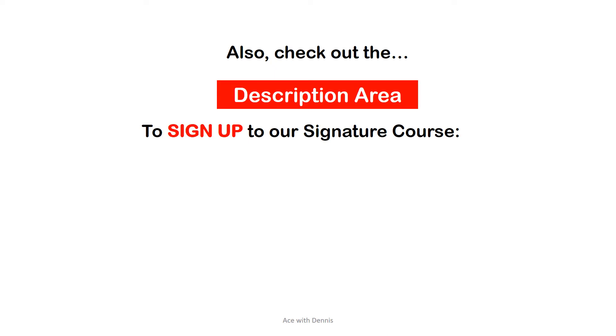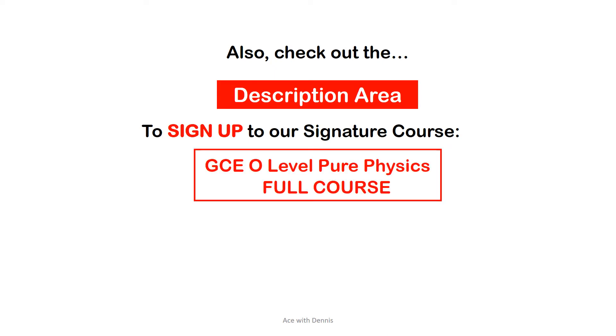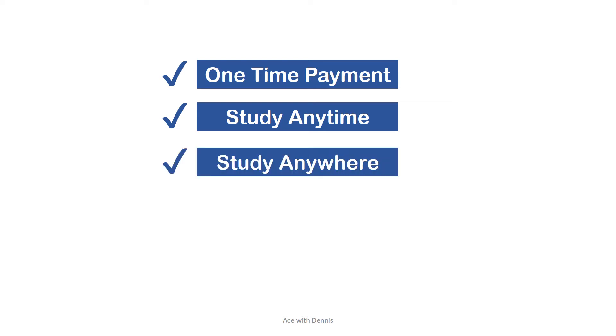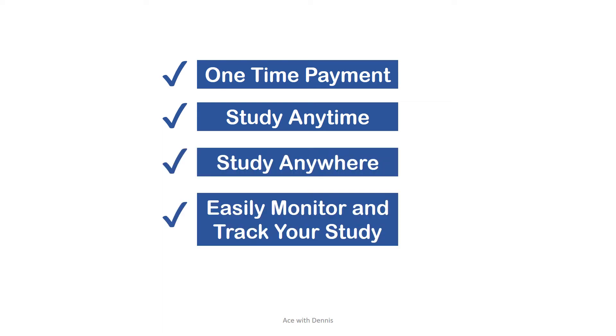Also, check out the description area to sign up to our signature course. GCSE O level pure physics full course at unbelievable price. It's one-time payment. You can study anytime you like, anywhere at your convenience. You can also easily monitor and track your study with Udemy's system.